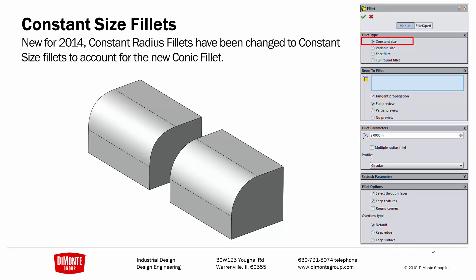New in SOLIDWORKS 2014, the name of the Fillet tool was changed. Previously, Fillet was called constant radius, but now it's been renamed to constant size. Likewise, variable radius has been renamed to variable size.